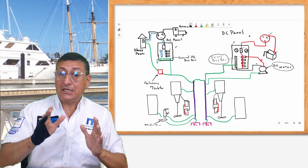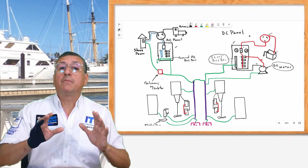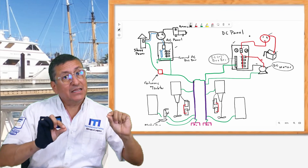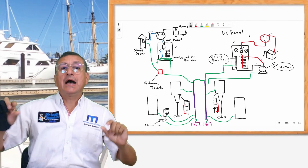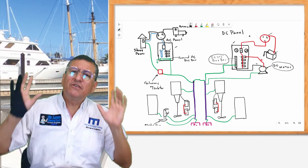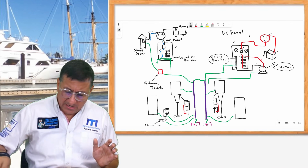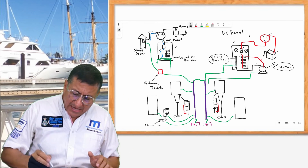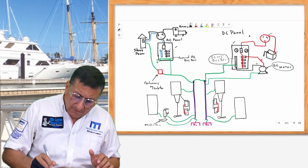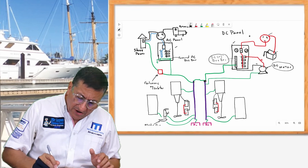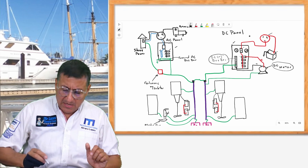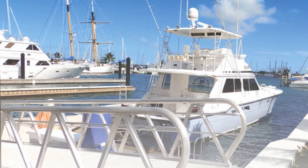Is that clear? The explanation about the DC negative bus bar and the AC ground bus bar — both of them are different. However, at the end of the day, both of them converge into the bonding system and they finish into the sink.